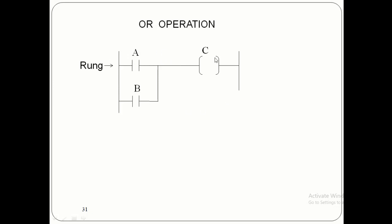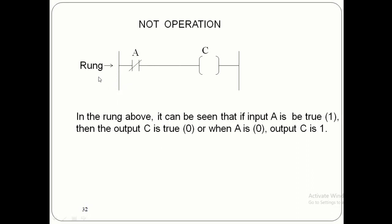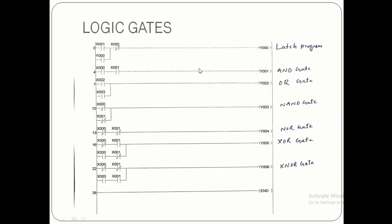This whole rung is one line of the ladder program. When we write a program in the second line it is the second rung, then the third rung, and in this way the program proceeds downward. The NOT operation works by connecting the input in normally closed condition — when we press the switch on it becomes off and the output will be 0. It is also known as an inverter: when input is 0 output is 1, and when input is 1 output is 0.